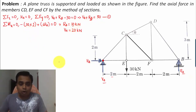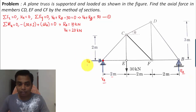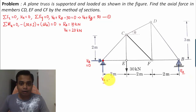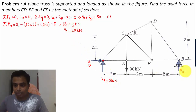So that was all about finding reactions at supports. The value of HA is 0, VA is equal to 20 kN, and RB has been computed as 10 kN.